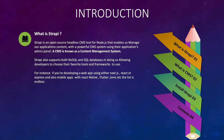We have looked at the headless CMS, but what is a CMS? A CMS is known as a content management system. Strapi also supports both NoSQL and SQL databases, allowing developers to choose their favorite tools and frameworks to use. For instance, if you're developing a web application using either Next.js, React, or Express, and also mobile apps with React Native, Flutter, Ionic, etc. The list is endless.